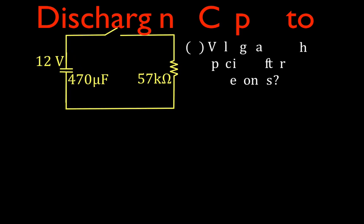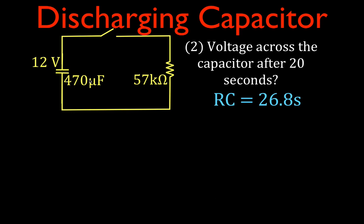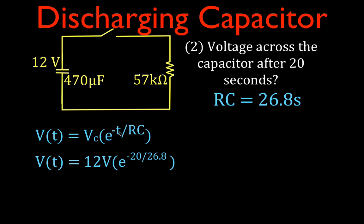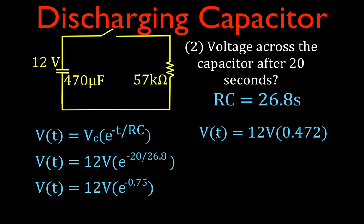That's number one. Now we're going to do it in terms of absolute time — 20 seconds. We have the same capacitor and resistor, so the same time constant of 26.8 seconds. Using the same equation, V(t) = V₀ × e^(−t/RC), with RC = 26.8 and t = 20 seconds, we get 12 times e raised to the power of minus 20 over 26.8, which is e to the minus 0.75. That gives us 47.2% of the original voltage — 0.472 times 12 — meaning after 20 seconds the voltage across the capacitor will be 5.66 volts.